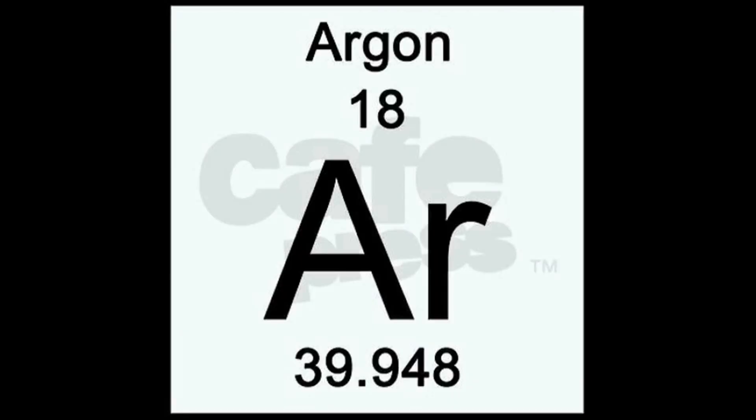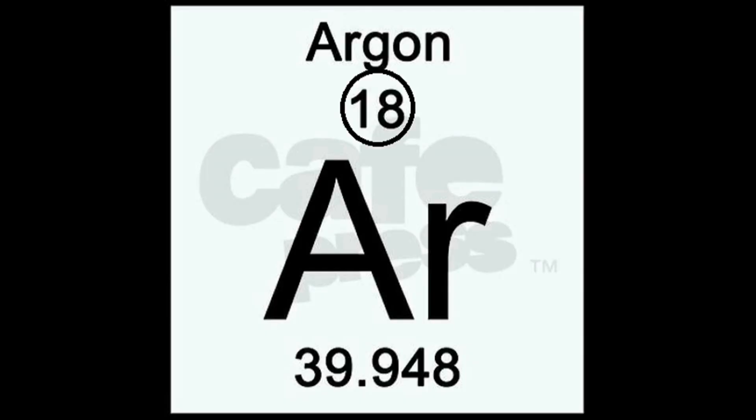Now that we've looked at the periodic table as a whole, let's take a look at one of those individual squares to see what kind of information it has. Let's use argon for all the examples. The things you'll find on basically all the squares: one, the atomic mass — the atomic mass is basically the mass or the weight of the atom. Argon's atomic mass is 39.9. Another thing that square is going to have is the atomic number. Argon's atomic number is 18. The atomic number tells you how many protons the element has.